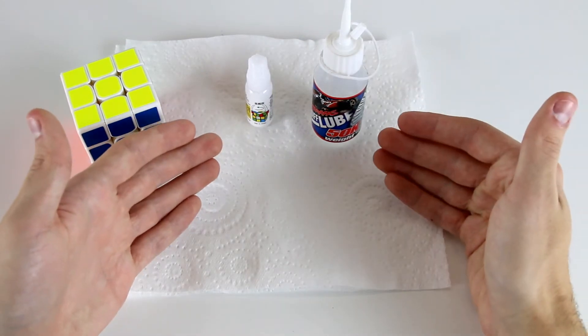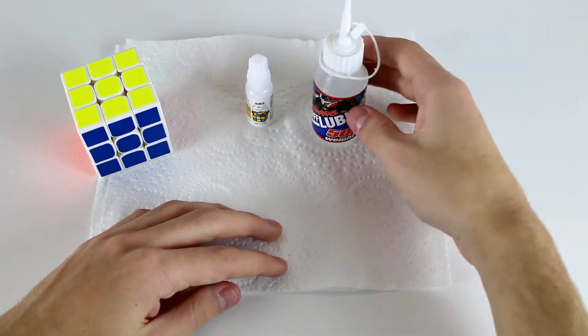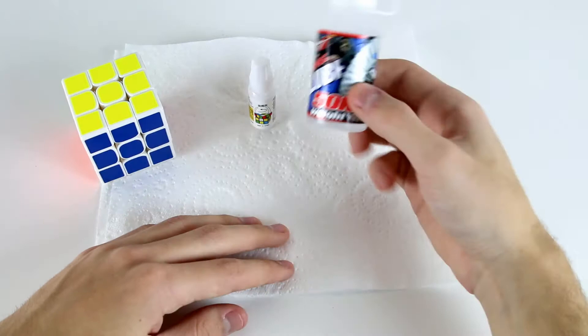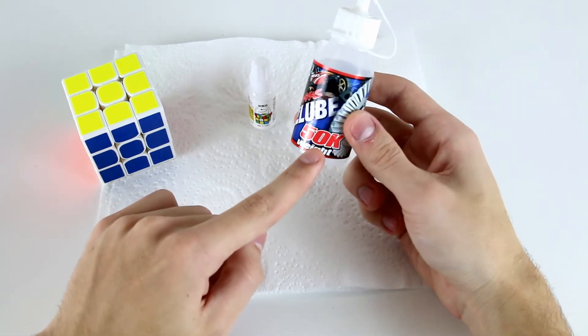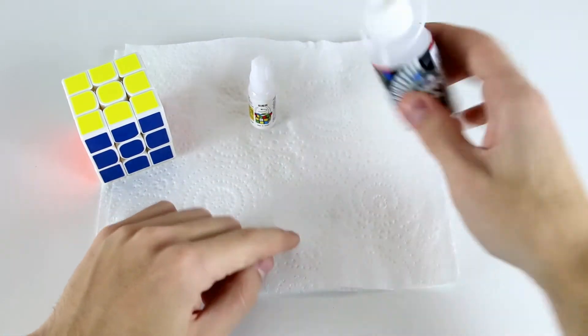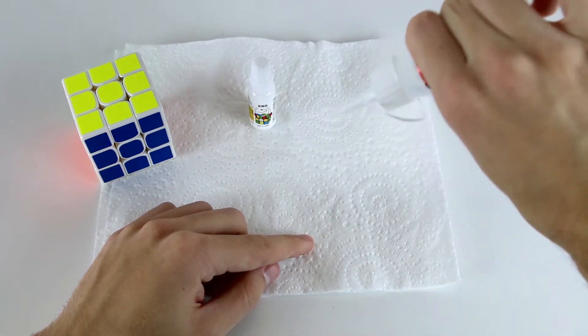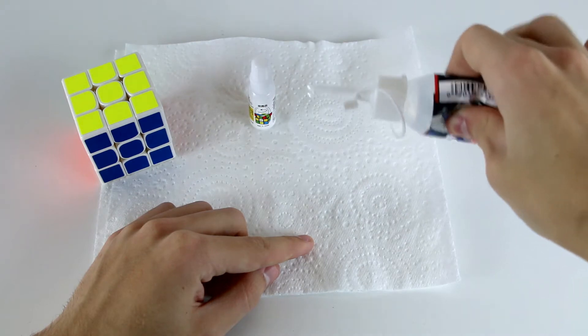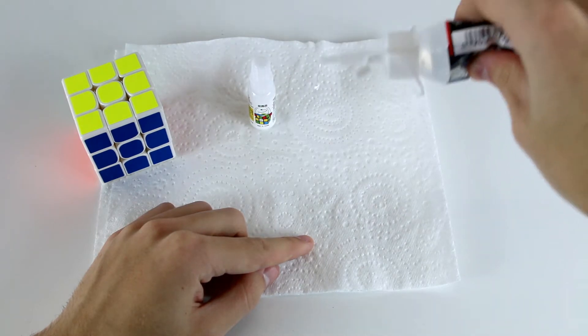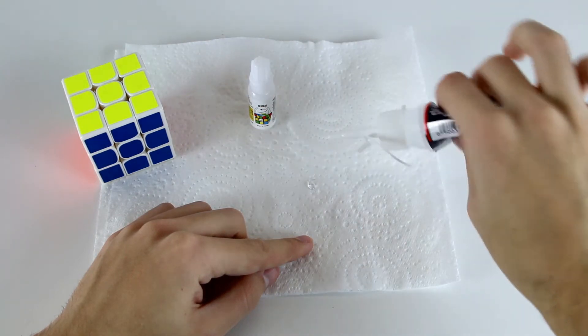So here's just two contrasting types of lubricants. Here we have Traxxas differential oil, 50k weight, and this is a really heavy lubricant, so you'll see that when I squeeze this out it's actually quite viscous like that so it's actually still sticking and we can get it down on paper like that.